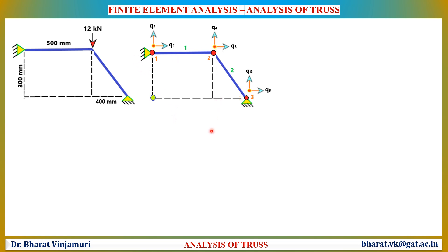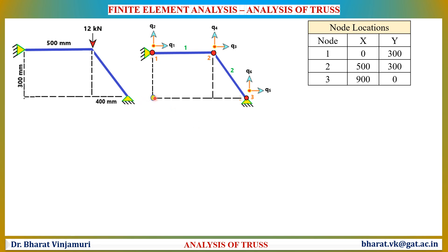The next step is to determine the coordinates of the nodes. The origin is taken at the lower left corner, so it becomes (0, 0). From this origin, the location of node 1 is (0, 300), node 2 is (500, 300), and node 3 is (900, 0) in x and y coordinates. Thus we determine all node locations.